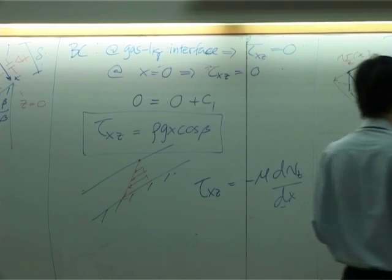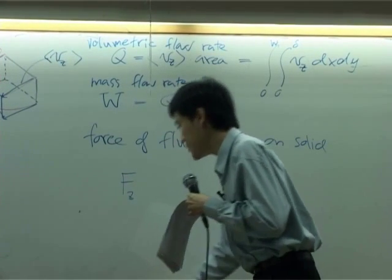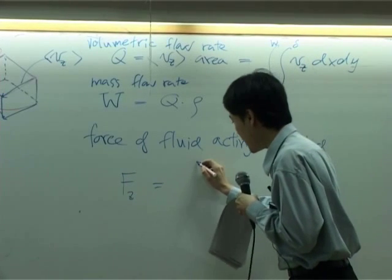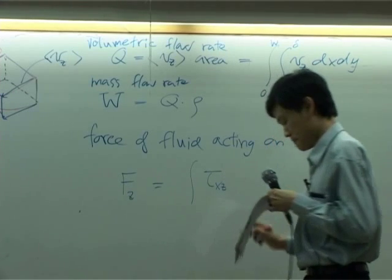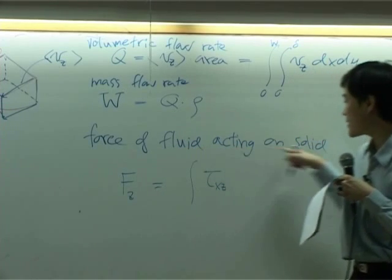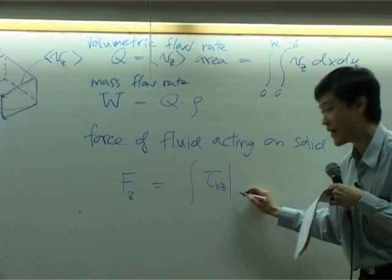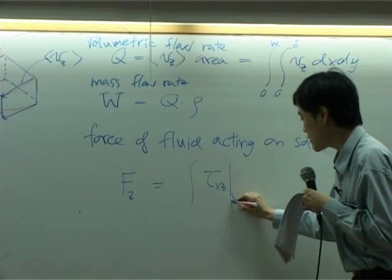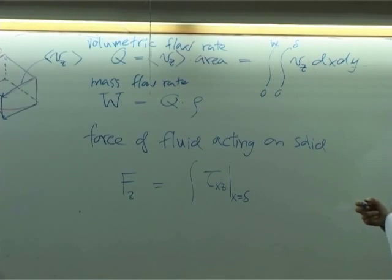So basically, force here, which should have direction in z direction, should be equal to integration of tau xz. But we are going to calculate force of fluid acting on the solid. So tau here is supposed to be tau located at the interface. The interface is where x equal to delta.